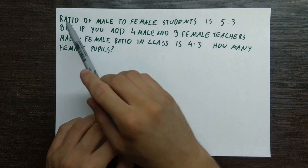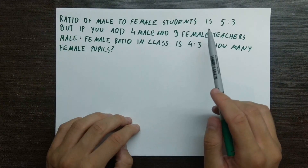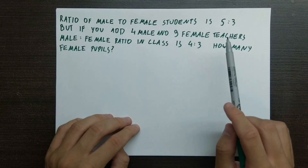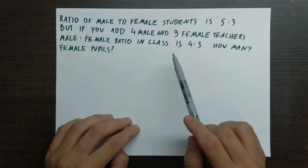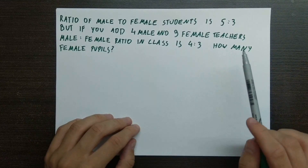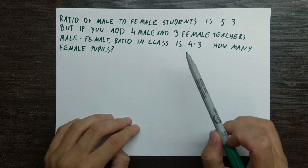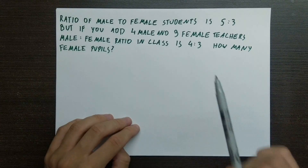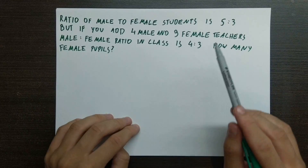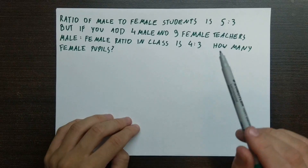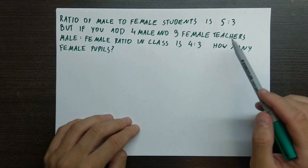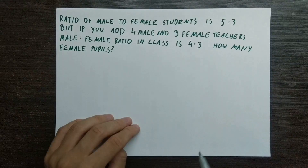Here's the question: the ratio of male to female students is 5 to 3. But if you add 4 male and 9 female teachers, the male to female ratio in the class becomes 4 to 3. How many female pupils are there? We know how many male and female teachers we have, we know the ratio of pupils, and we know the new total ratio. However, we don't know how many pupils we have, which is what makes this quite complex — we know how many we're adding, but we don't know the original amounts.